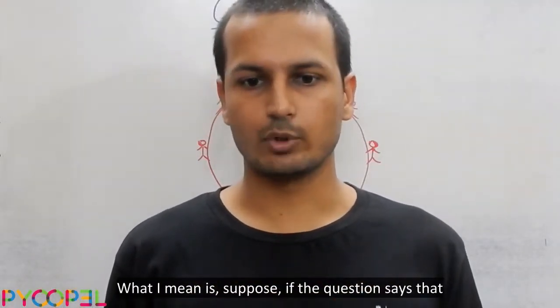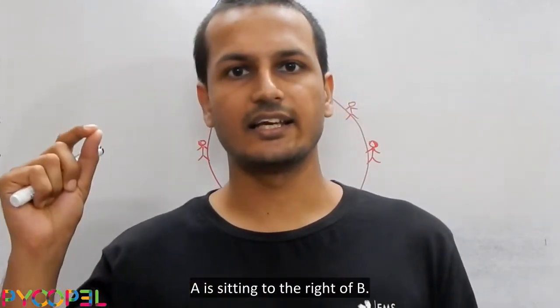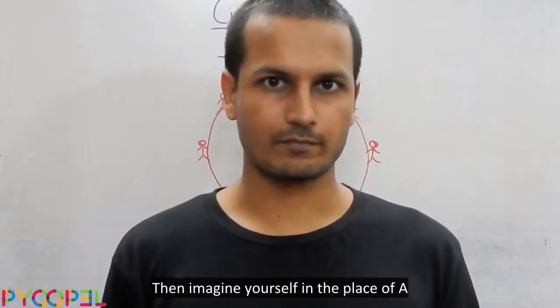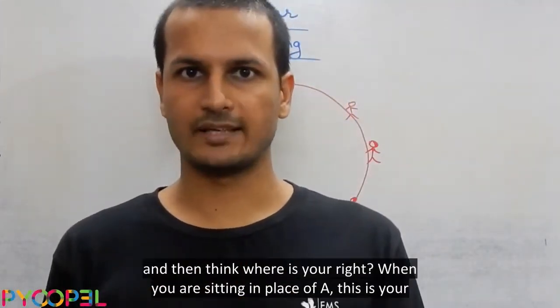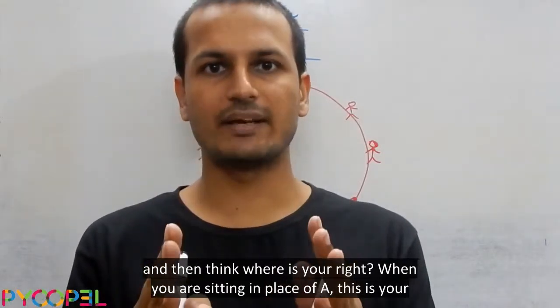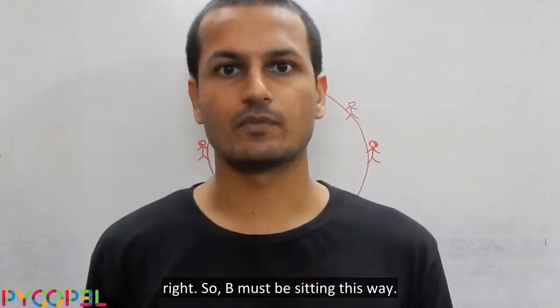What I mean is, suppose if the question says that A is sitting to the right of B, then imagine yourself in the place of A and then think where is your right. When you are sitting in place of A, this is your right. So B must be sitting this way.